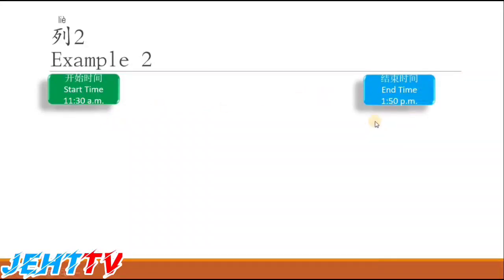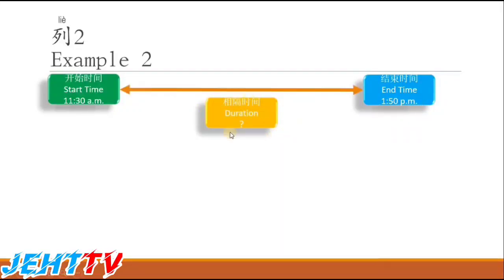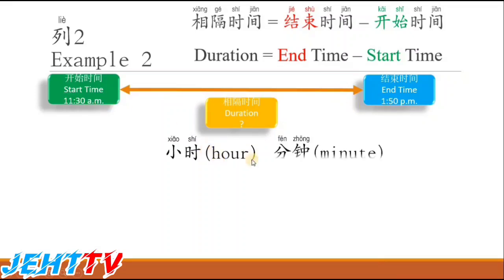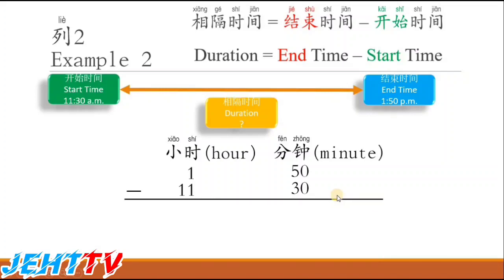Now we look at Example 2. The start time is 11:30 a.m. and the end time is 1:50 p.m. So what is the duration between these two times? Don't forget the formula: duration equals end time minus start time. Because we have hours and minutes, we need to write them down separately — end time: 1 hour 50 minutes, minus start time: 11 hours 30 minutes.